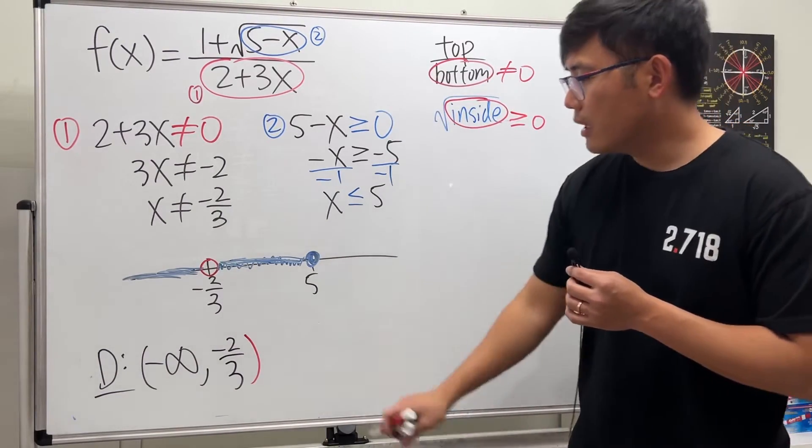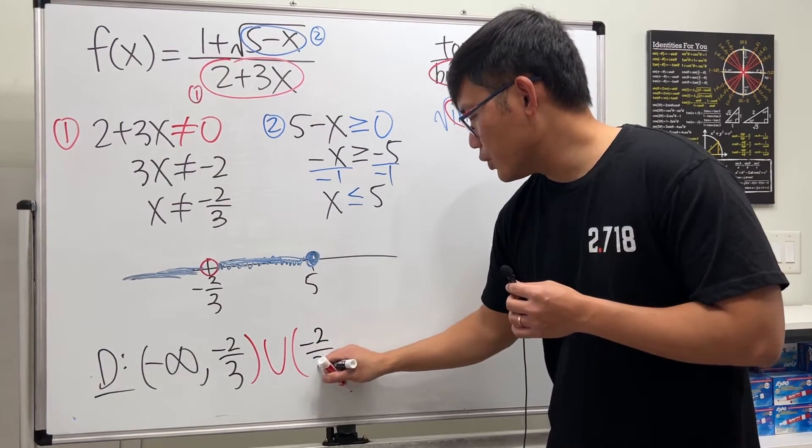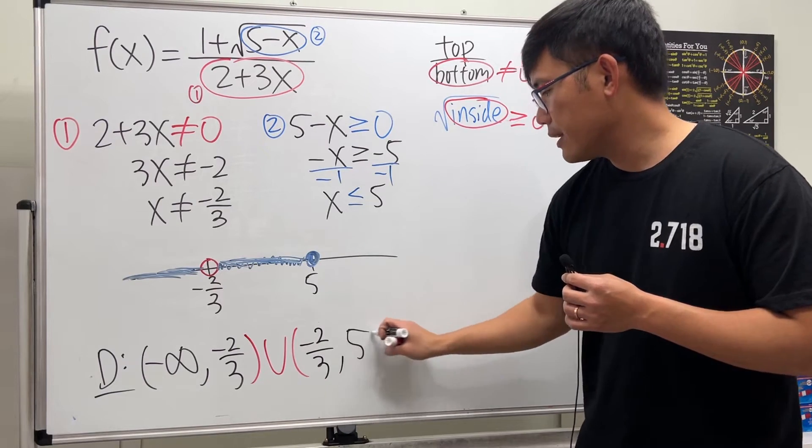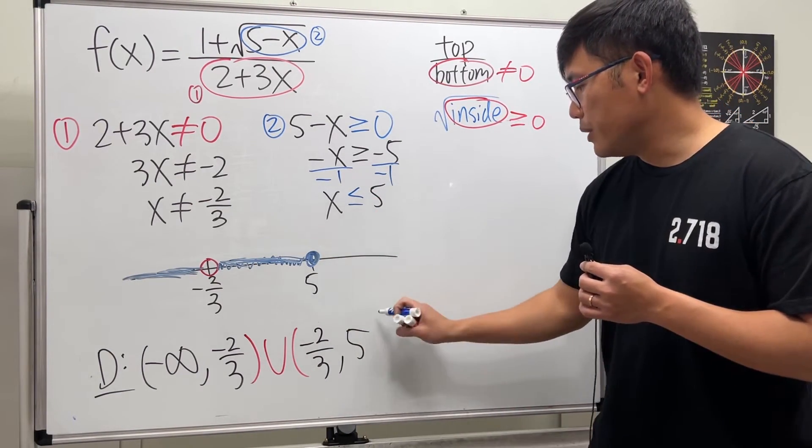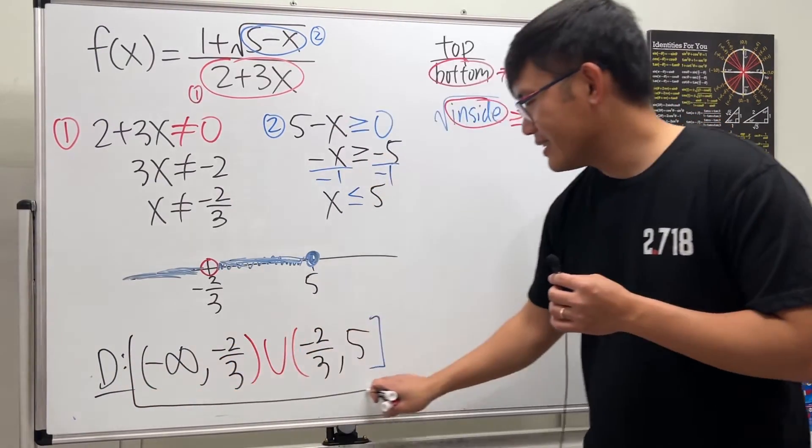Union, and we pick up from negative 2/3 again, do not include that number, comma, up to 5. But for the 5 we are including it, so we use a square bracket. This right here is it.